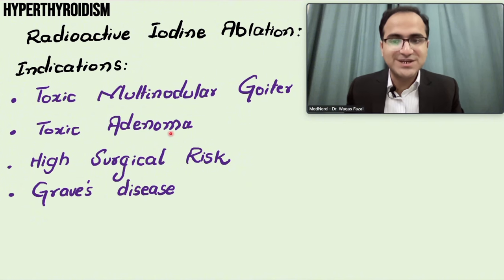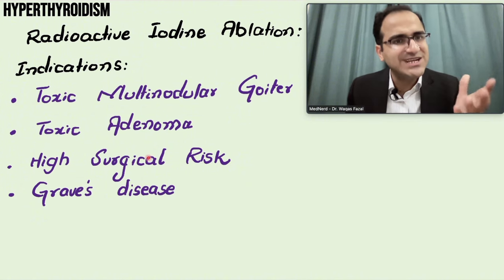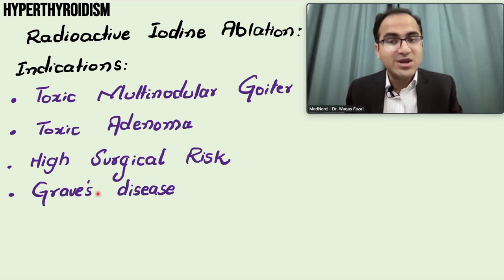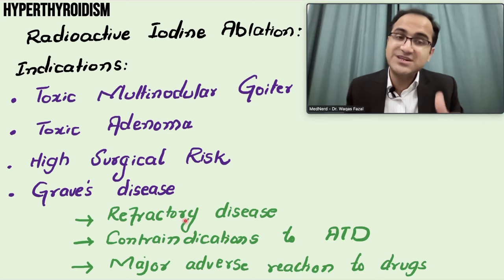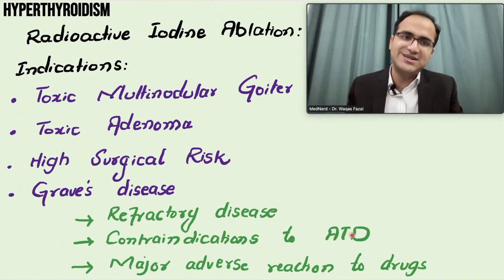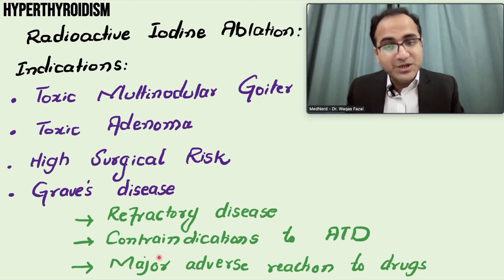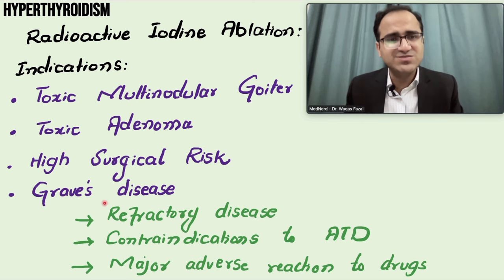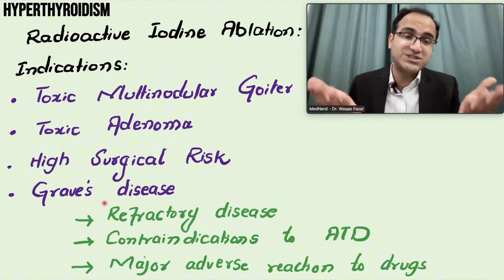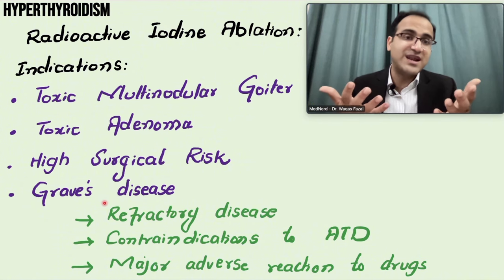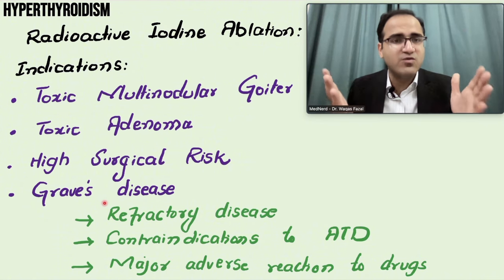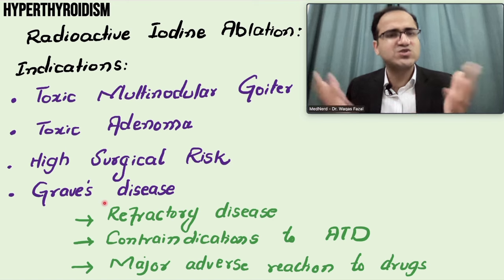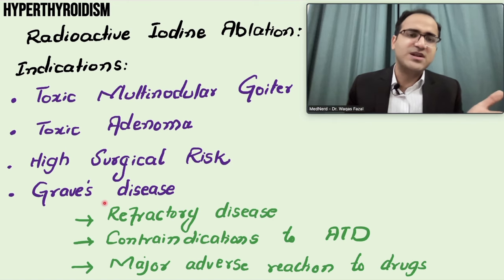Radioactive iodine ablation is indicated in patients with toxic multinodular goiter, toxic adenoma, patients with high surgical risk who cannot undergo surgery, Graves' disease patients not responding to antithyroid drugs, patients with contraindications to antithyroid drugs such as liver disease, or those having a major adverse reaction to the drugs. Patient choice is also an important factor that can drive the decision toward surgery.